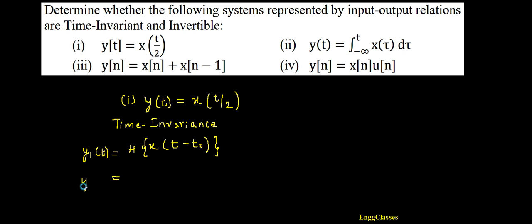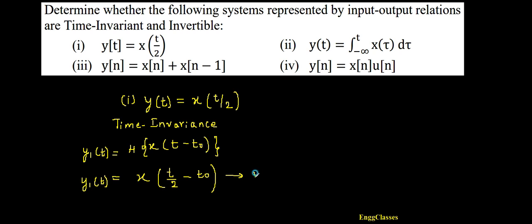Considering that, we get y₁(t) = x(t/2 - t₀). Here there is a t, so that t gets replaced with t/2 because that is the nature of the system, and minus t₀ remains as it is. This is the first part — equation number one.